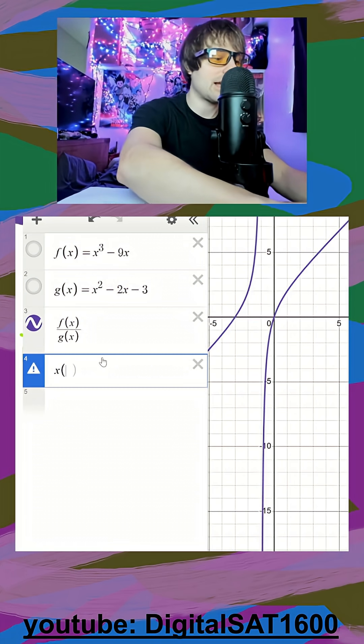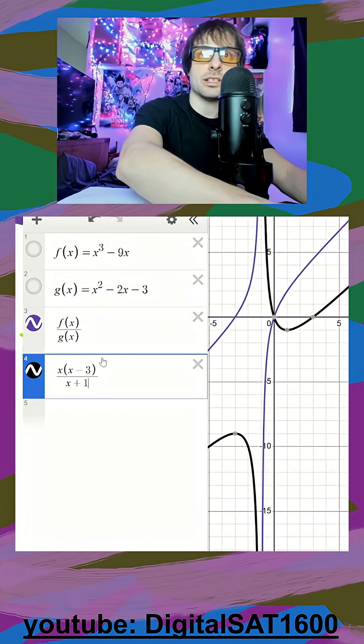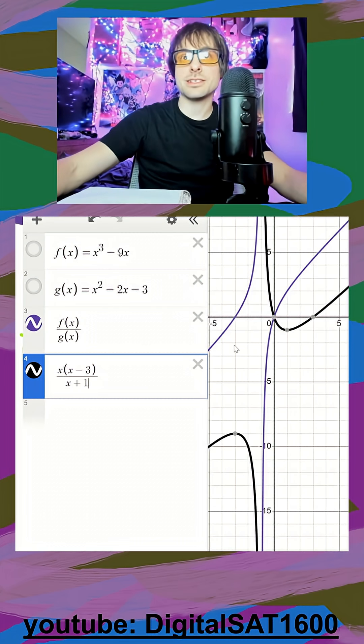So in c, we have x times x minus three, divided by x plus one. You can very clearly see that's not going to match our graph.